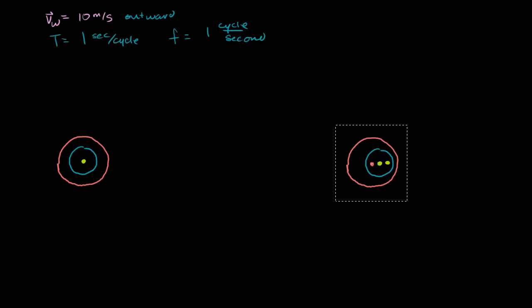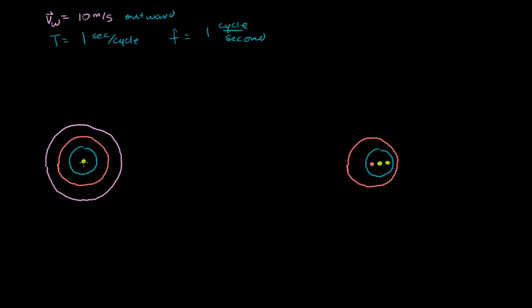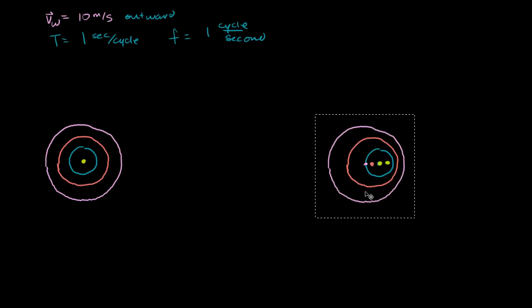What about the crest either source emitted 3 seconds ago? It would be 30 meters radially outward — another 10 meters from the last one. The stationary source has been there the whole time, but the moving source was not here 3 seconds ago: 1 second ago here, 2 seconds ago there, 3 seconds ago even further left. So the crest is centered 30 meters radially outward from that point.